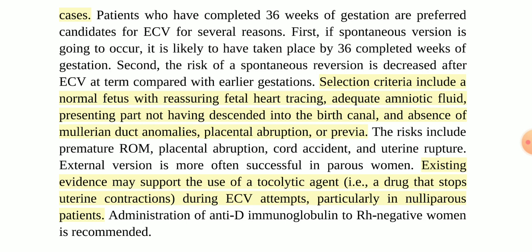There are several reasons for this. First, if spontaneous version is occurring — meaning the breech position is slowly converting to vertex on its own — we can facilitate it externally. This normally happens around 36 weeks of gestation. Second, the risk of spontaneous reversion decreases after external cephalic version at term compared with early gestation.